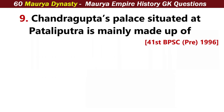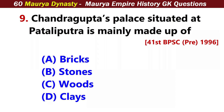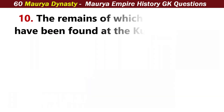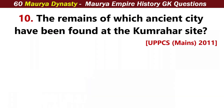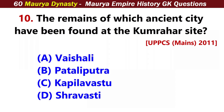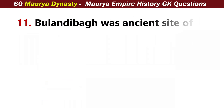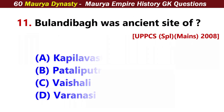Chandragupta's palace, situated at Pataliputra, is mainly made up of? Answer D: Wood.